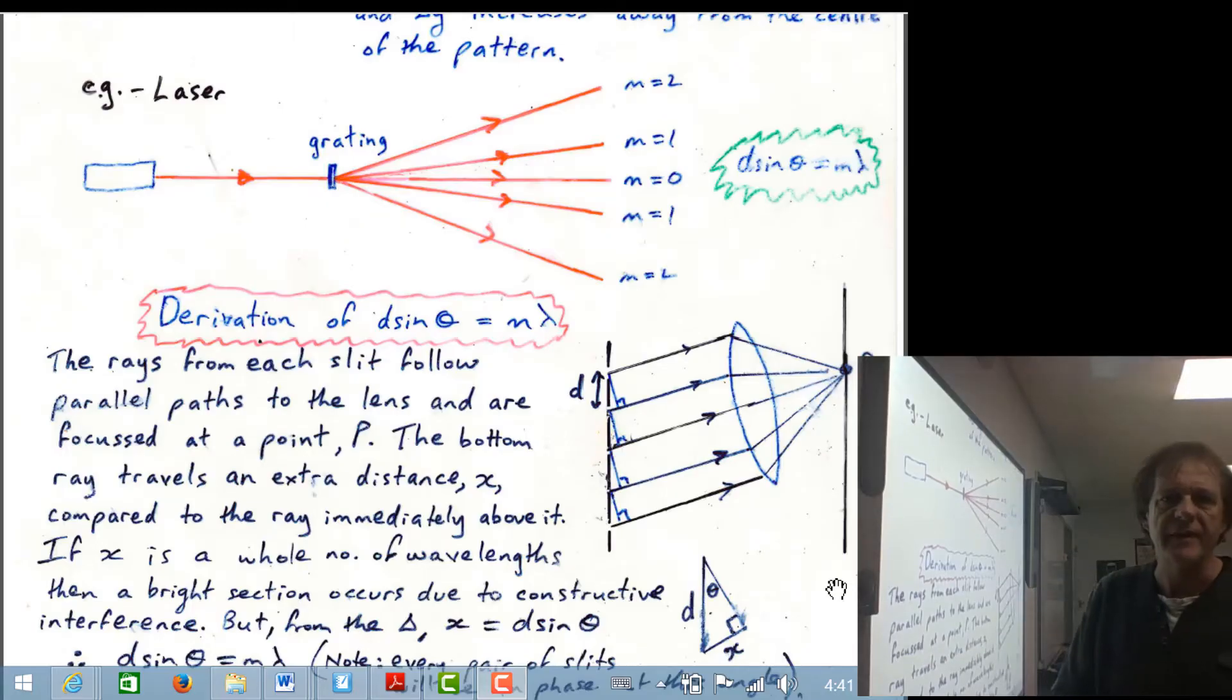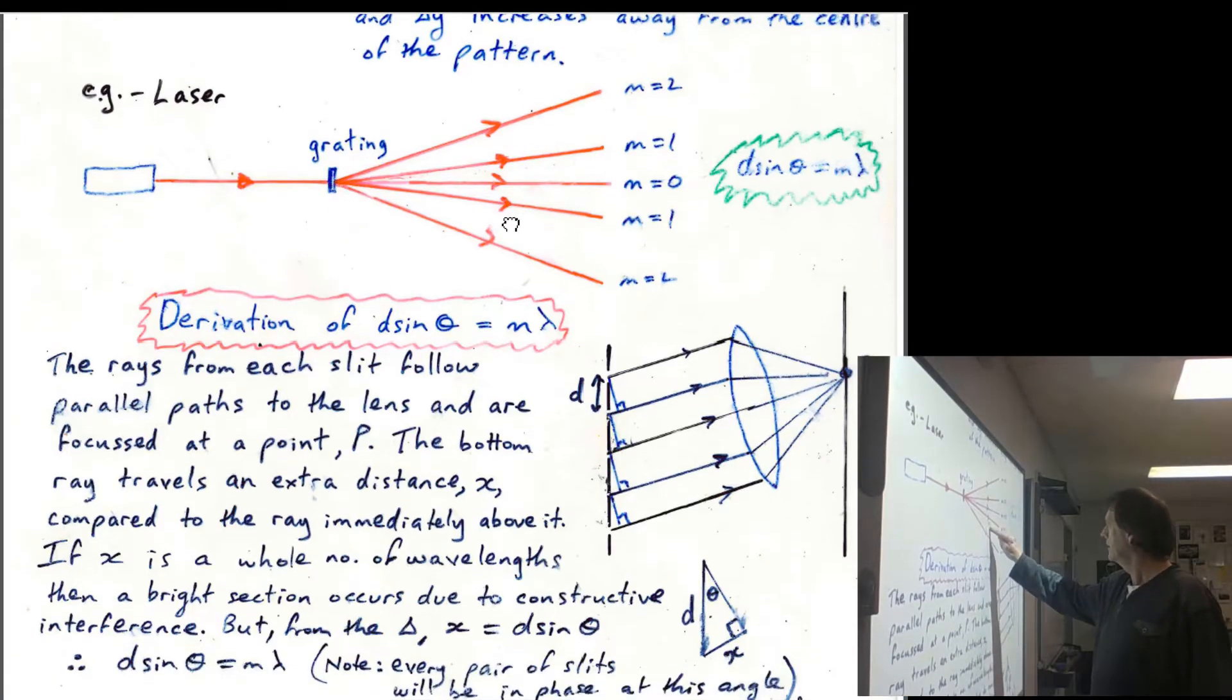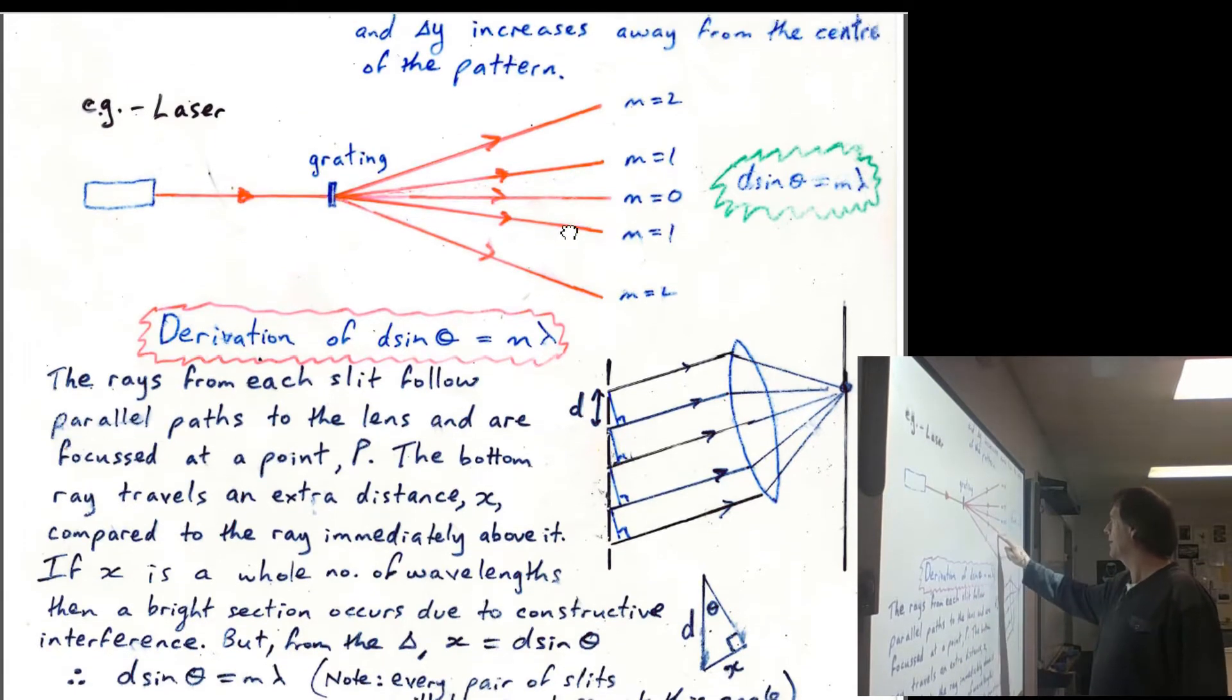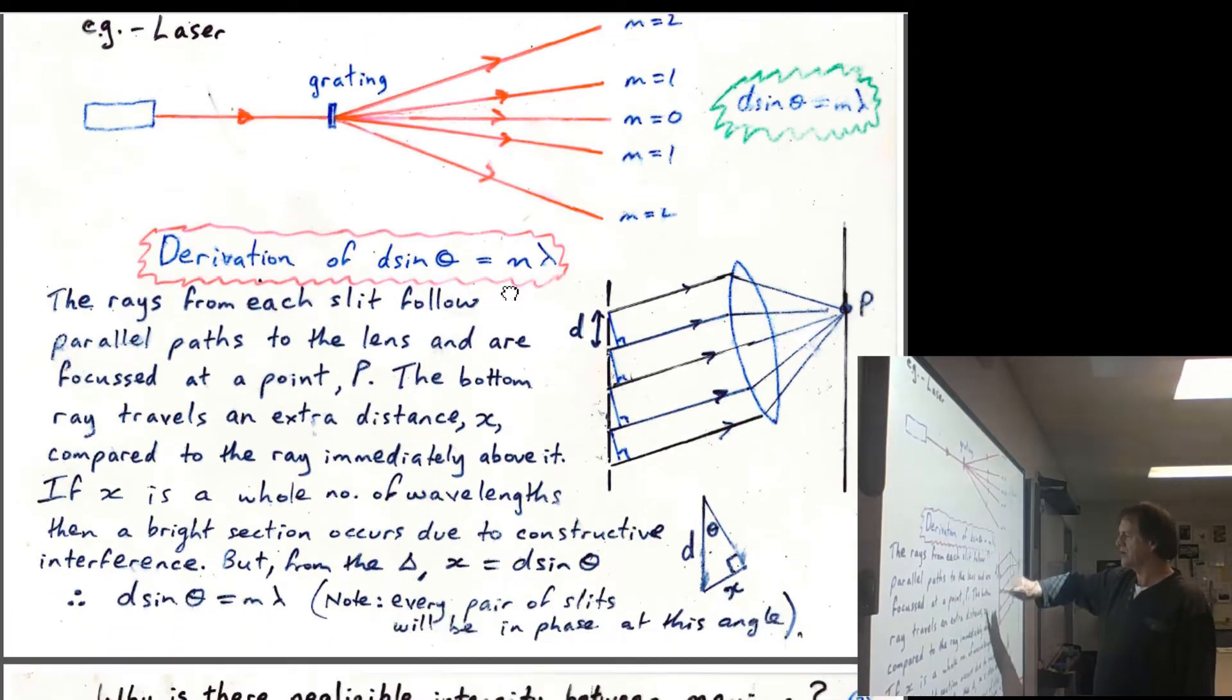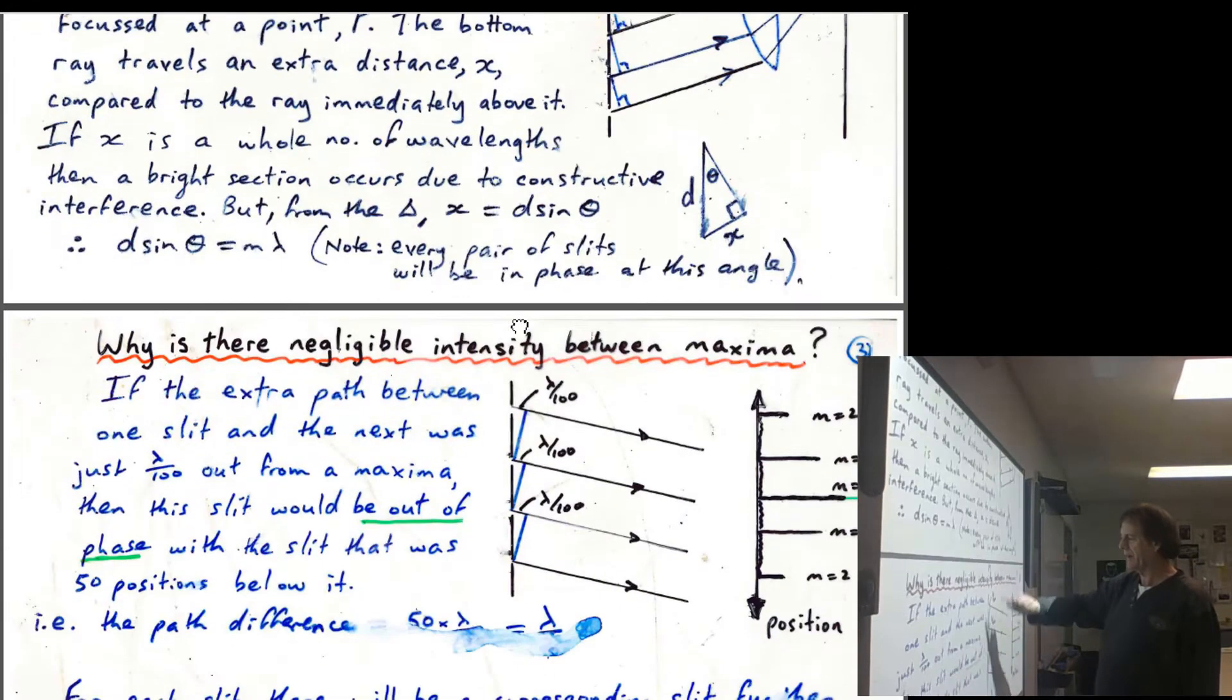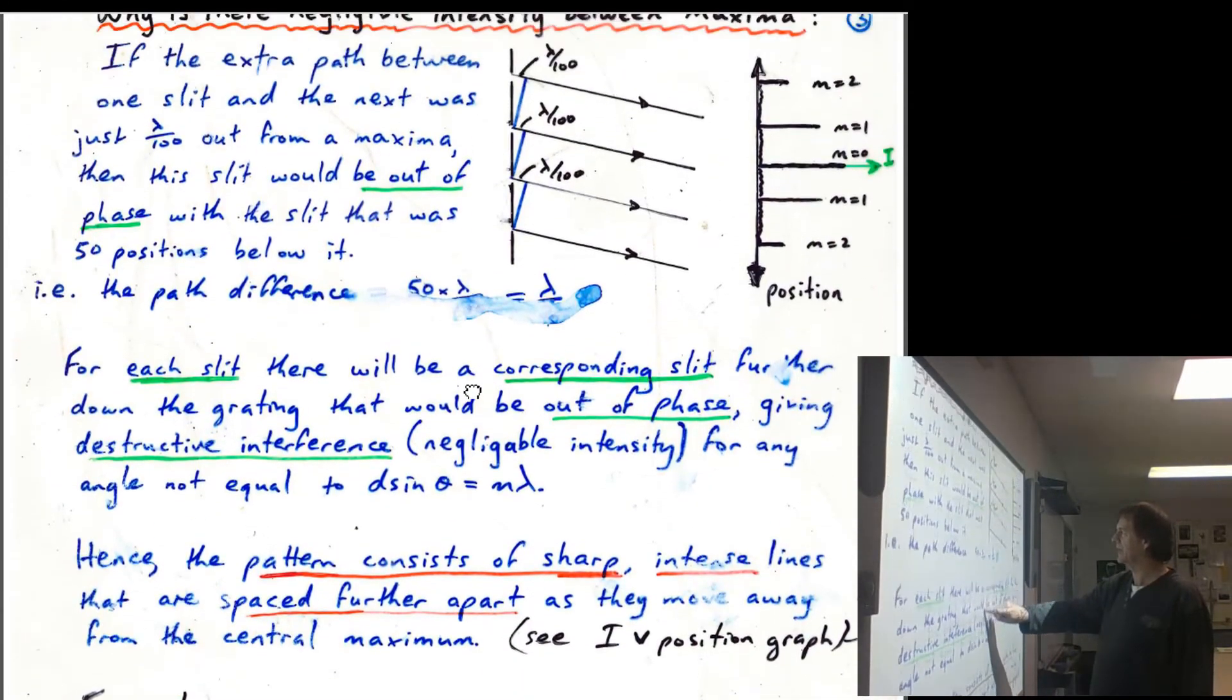So what I've just shown you there is this idea of the diffraction grating and the lines of maximum coming through and going onto a screen in the zero order. So we've just done the derivation of d sin θ. We've talked about what happens with the negligible intensity, so you get sharp, intense maxima.